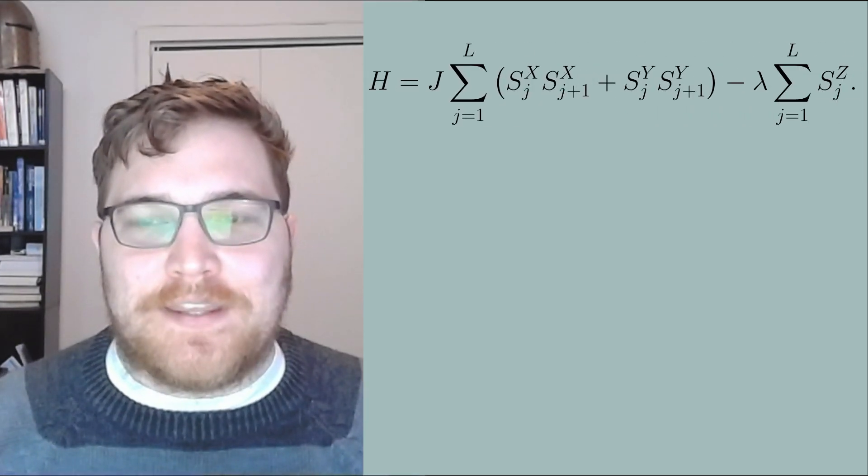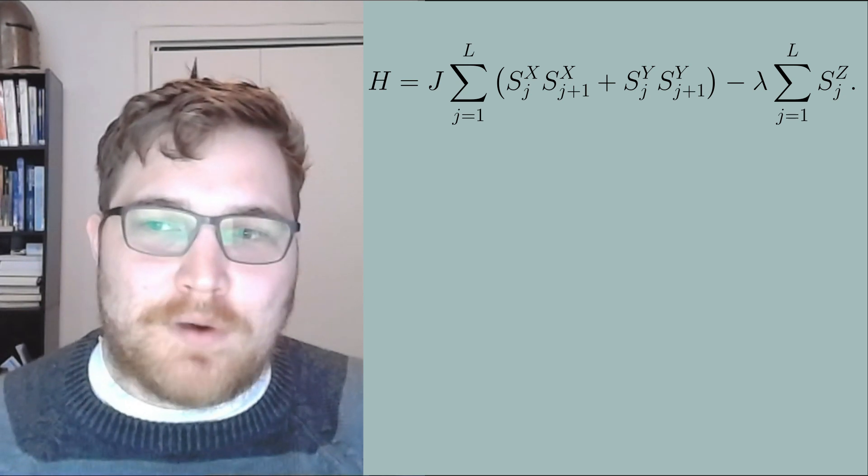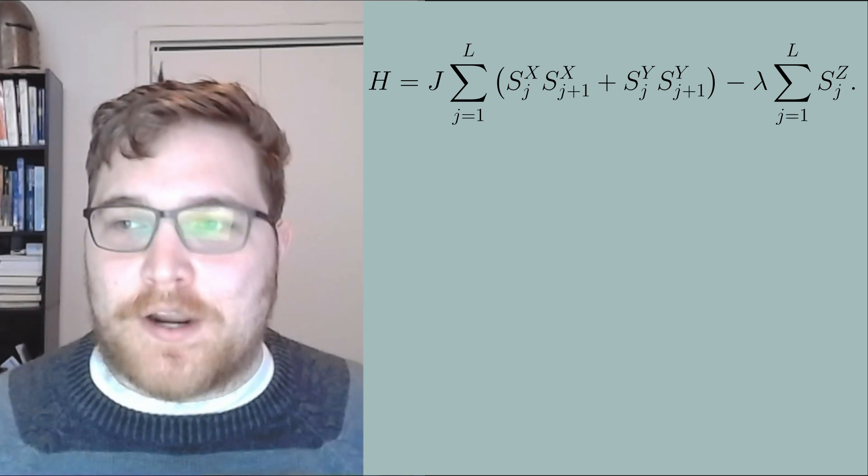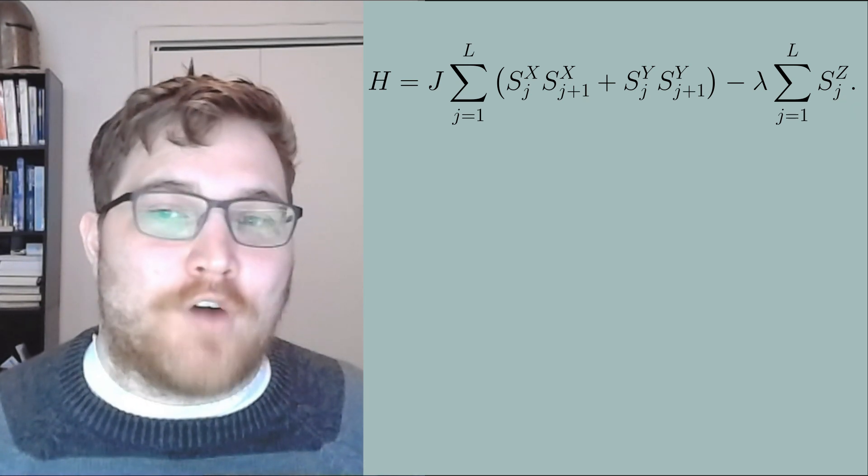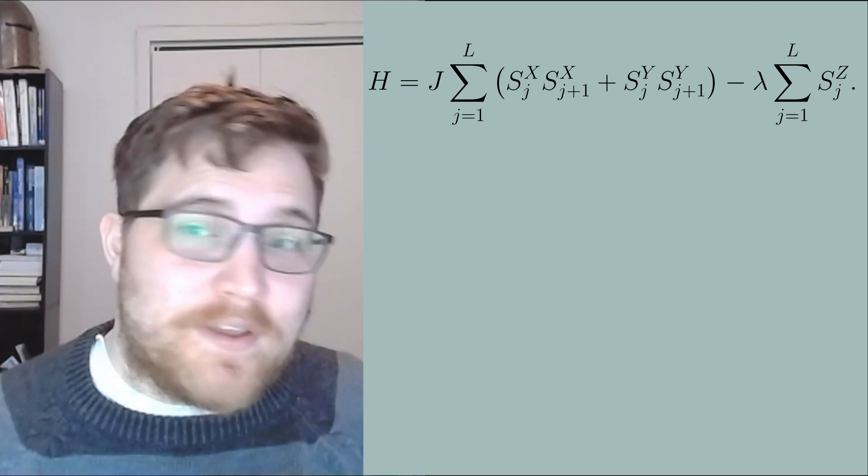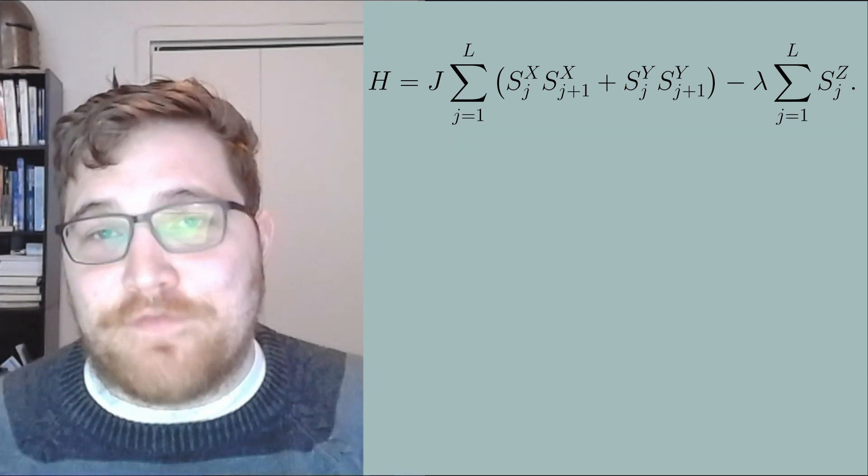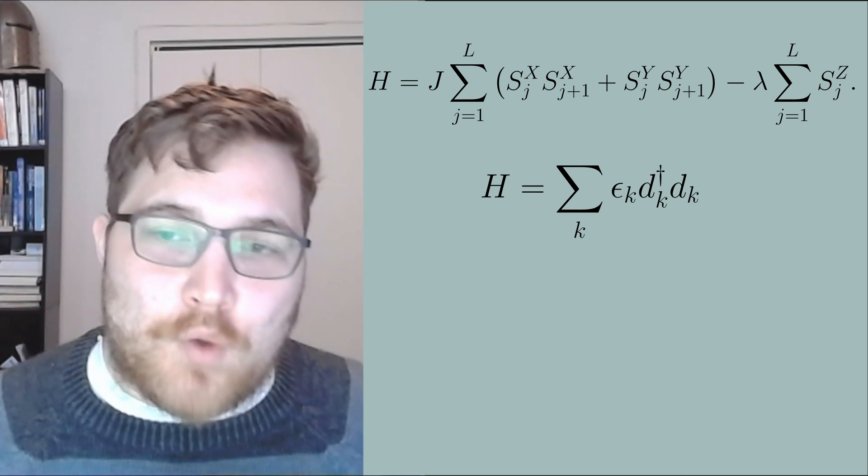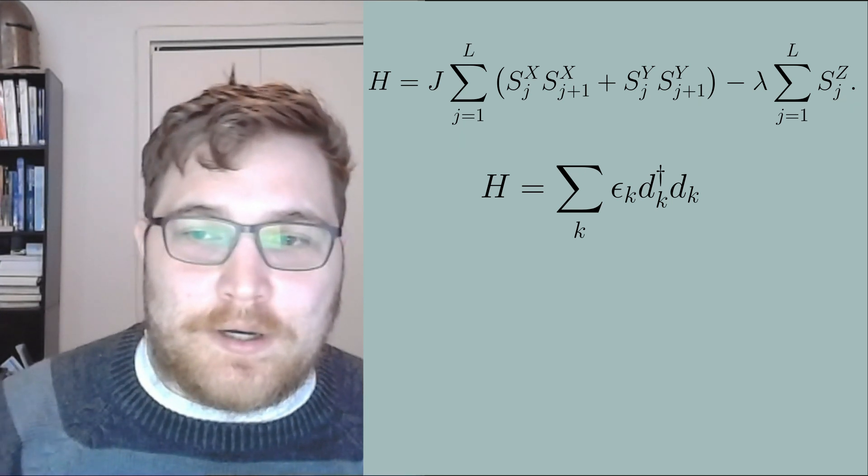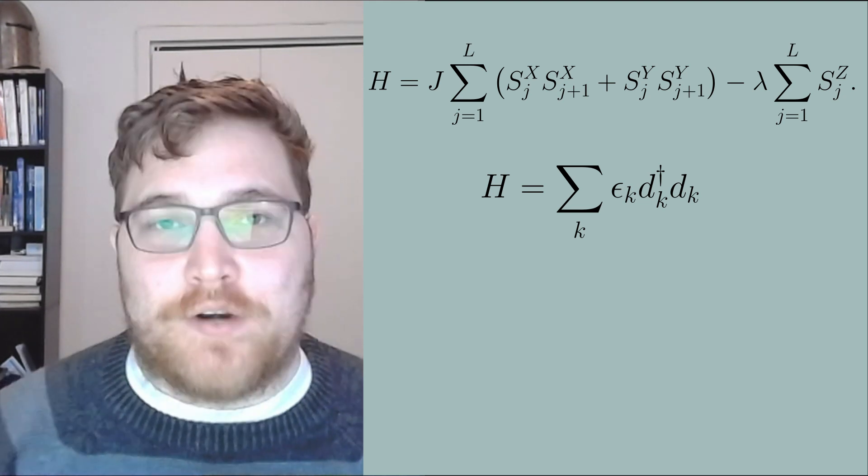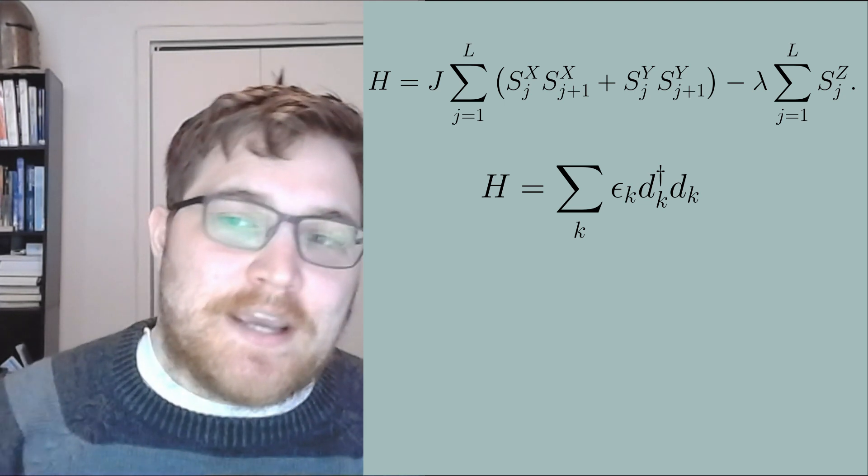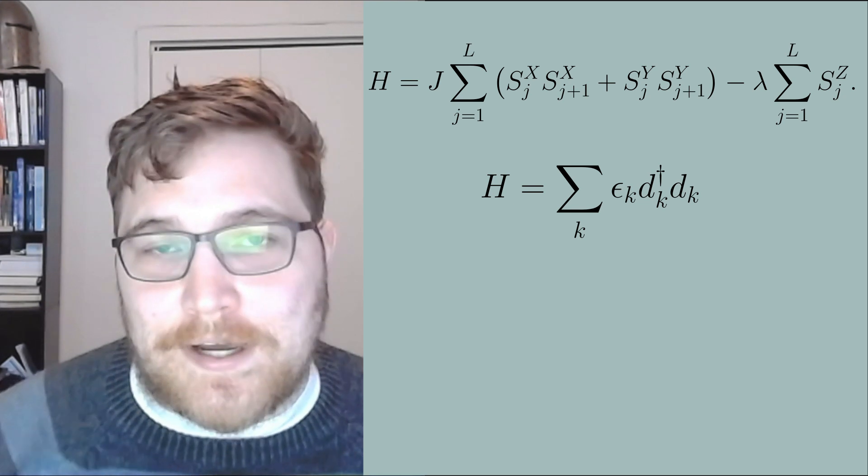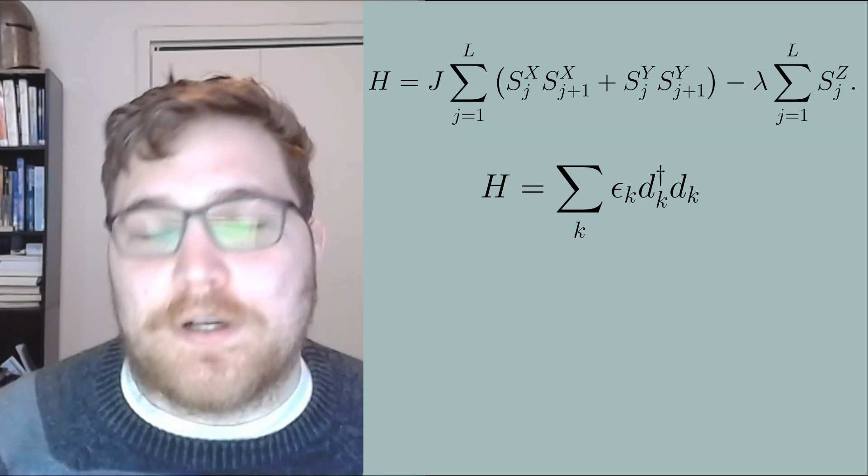We are looking at the spin one half XX model on a periodic chain written in the following form. After solving this model we arrive at a free fermionic Hamiltonian where H equals a sum over epsilon k, which are our energy eigenmodes, and dk dagger dk are fermionic creation and annihilation operators.